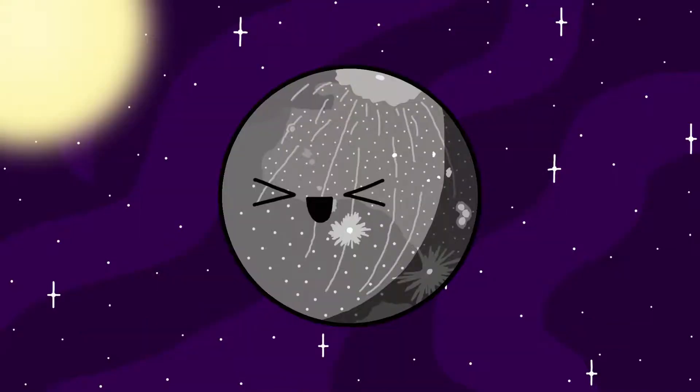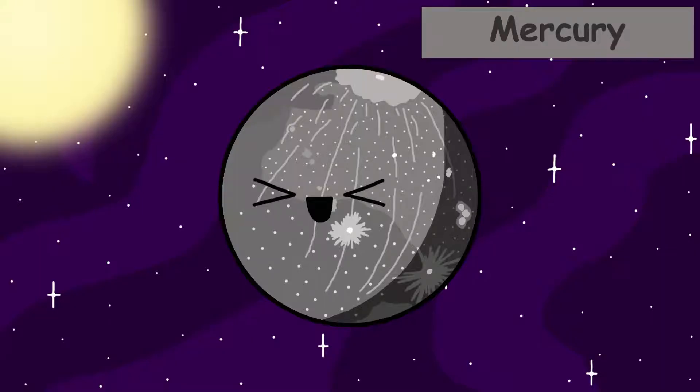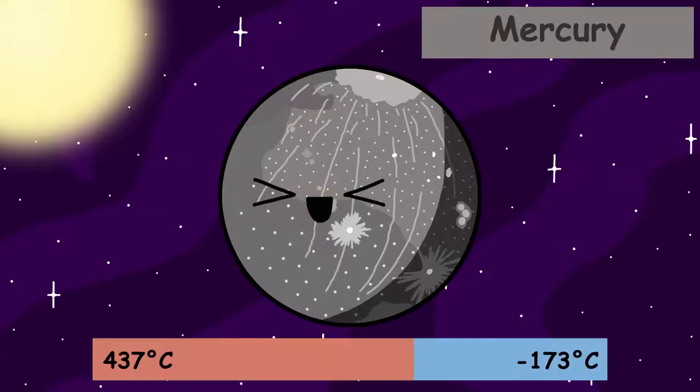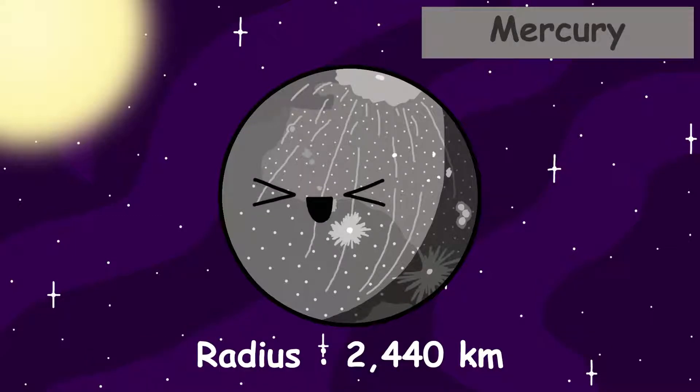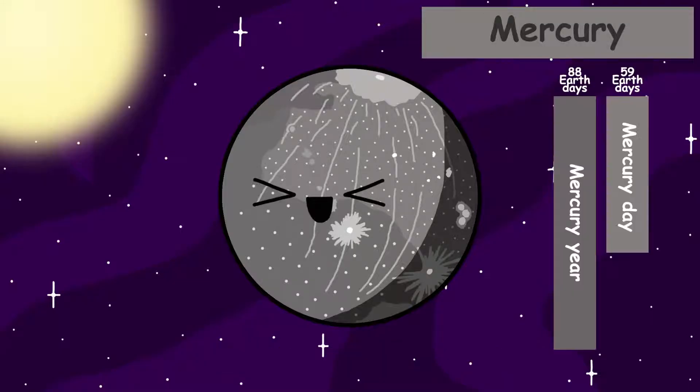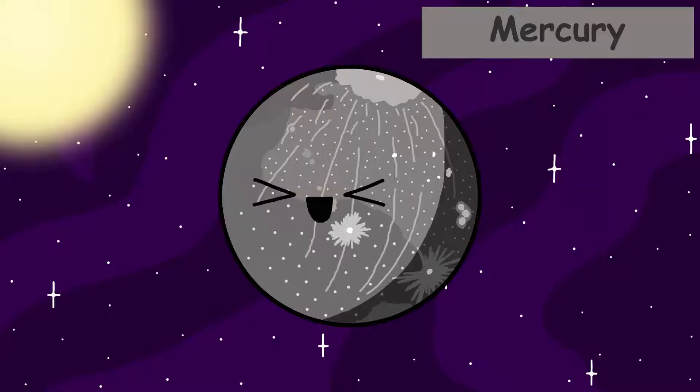The first planet from the sun is Mercury. Its surface temperature ranges from about 400 degrees Celsius during the day to negative 200 degrees Celsius during the night. Mercury has a radius of 2,440 kilometers. A Mercurian year lasts 88 Earth days and Mercury completes one rotation every 59 Earth days. Mercury has one of the most cratered surfaces in the solar system.